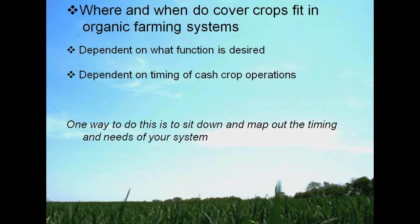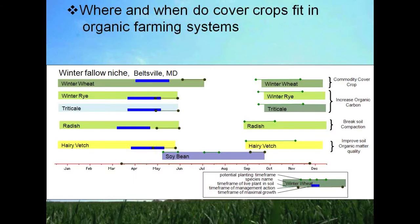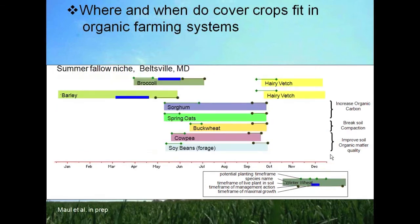One way I've been doing this is by using a tool I'm developing, which eventually will be available to farmers and extension agents. It's basically a timeline with crop activities plotted on it. Looking at the key in the lower right-hand corner: the colored bar indicates the timeframe that a live plant is in the soil; green bars on top indicate a potential planting timeframe; the brown bar on the bottom indicates a timeframe of management action; and the blue box indicates a time of maximal growth.